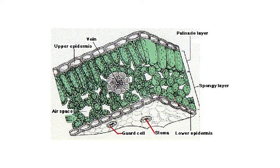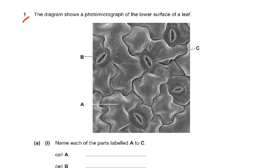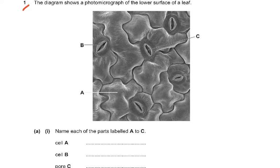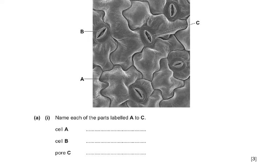Looking at the diagram, the question asks you to name each of the parts labeled A to C. A is the epidermis or epidermal cell, B is the guard cell, and C is the stoma, stomata, or stomatal pore — any of these would be correct.